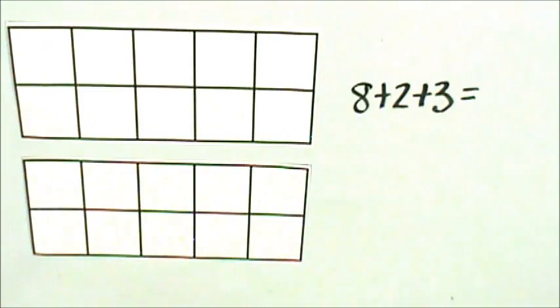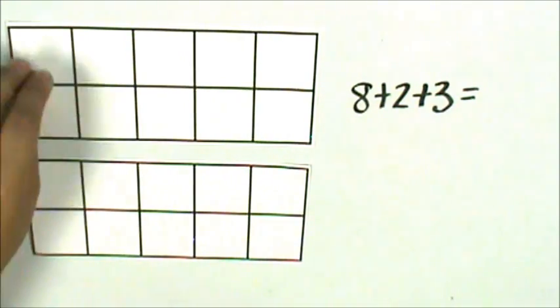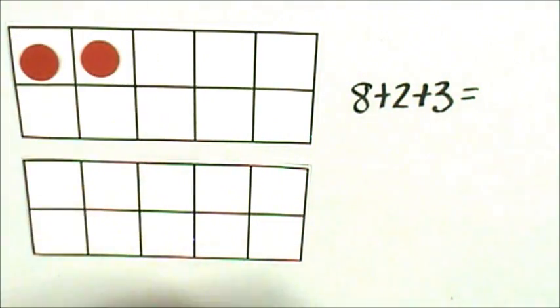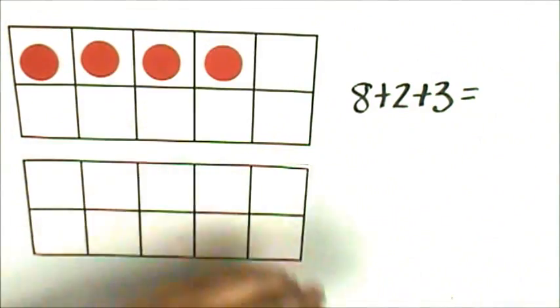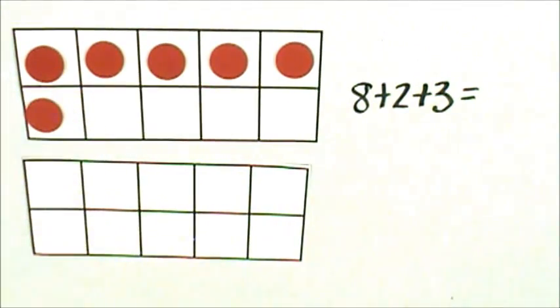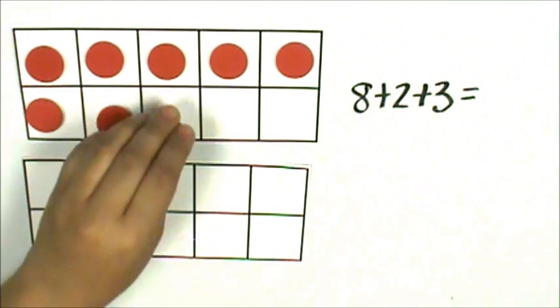8 plus 2, so let's represent 8. The top row is 5, 6, 7, 8.